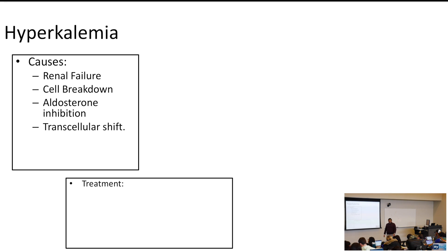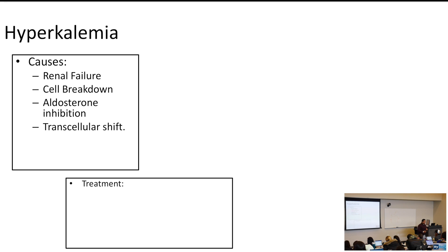Aldosterone inhibition can cause hyperkalemia. Aldosterone normally brings in sodium and makes you hypokalemic because you excrete potassium. With aldosterone inhibition, it's the exact opposite — you are no longer hypokalemic, you become hyperkalemic.